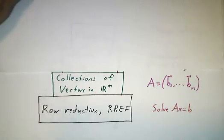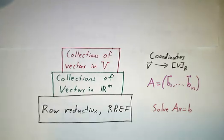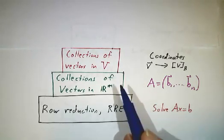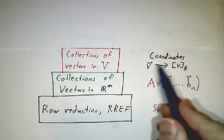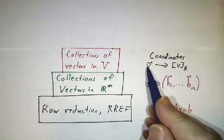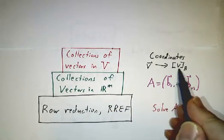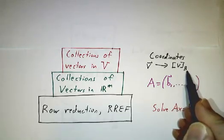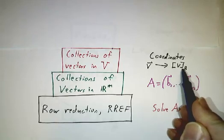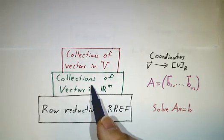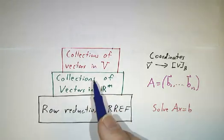That's great if you've got vectors in R^m, but what if you have vectors in some other vector space, some abstract vector space, a space of polynomials, for example? Then you need to use coordinates. If you pick a basis for V, then to every vector you can associate a column of numbers, the coordinates of that vector in the basis B. Then you can use everything you learned about collections of vectors in R^m and apply it to collections of vectors in V.